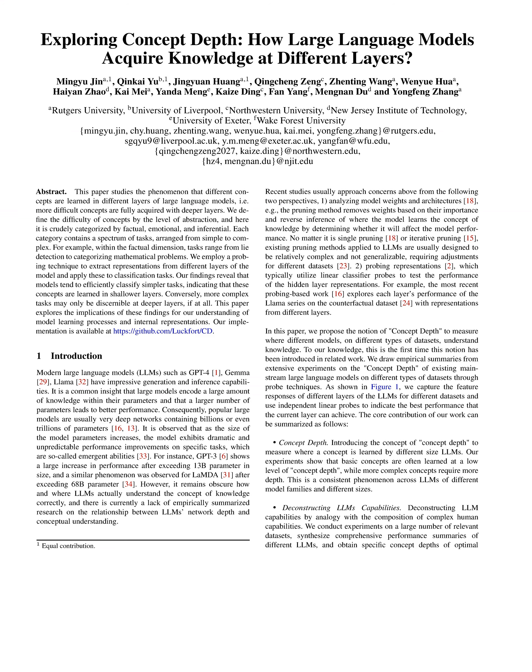The paper conducts extensive experiments using probe techniques to empirically summarize the concept depth of mainstream large language models on different datasets. The core contributions include introducing the concept of concept depth, deconstructing LLMs' capabilities by analogy with human capabilities, and providing a new perspective on LLM robustness from the concept depth perspective.